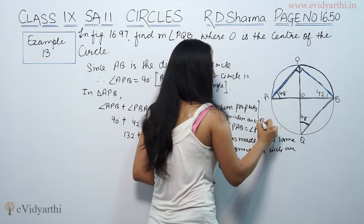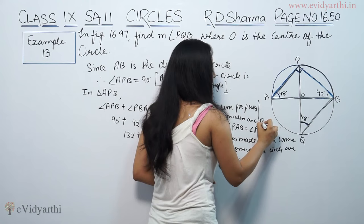Angles in the same segment are equal. So this was example 13 from Adi Sharma. Do watch the next video for more questions. Goodbye.